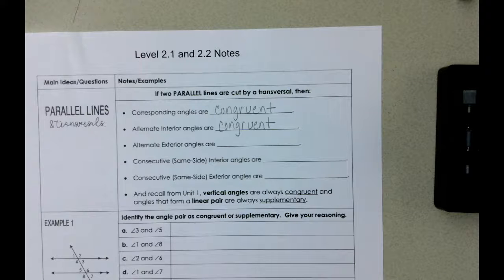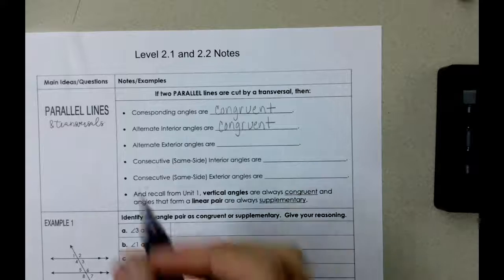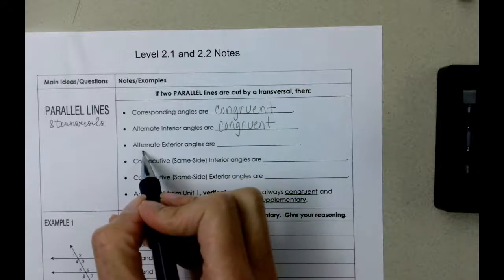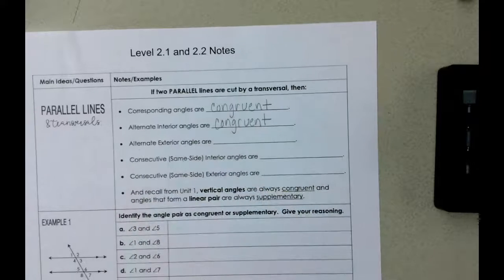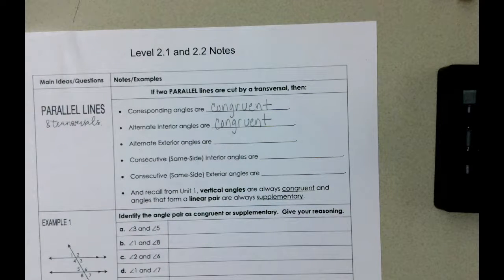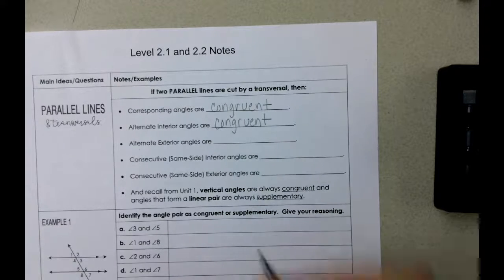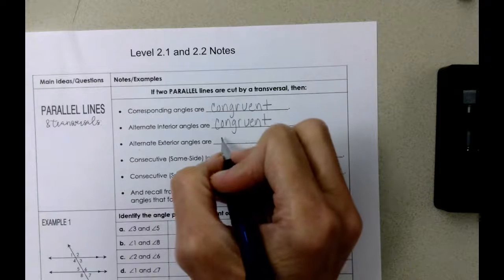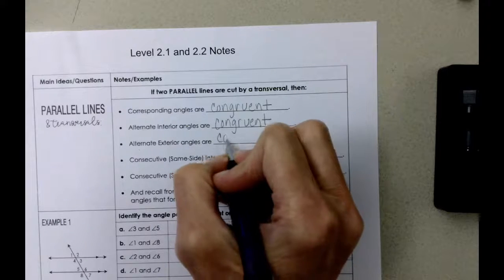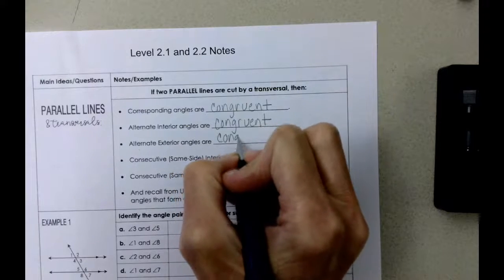And then the exterior — it's on the outside of the parallel lines. They are alternate exterior angles. But alternate exterior angles are congruent.